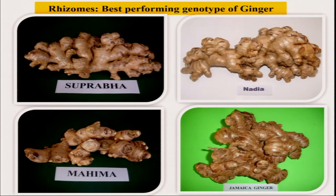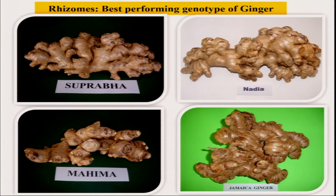There are different types of varieties or germplasm which play a very important role, and every time we have to choose germplasm not only on yield and quality value but also on which germplasm are resistant to insect pest and diseases. Varieties like Suprabha, Nadia, Mahima, and Jamuinanagar are available for ginger — Nadia is a very popular variety. Only this type of variety should be promoted under organic farming.